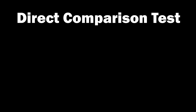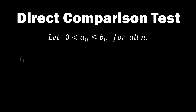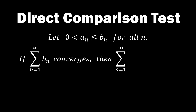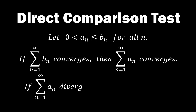Let's first understand what the direct comparison test is. Suppose we have two positive sequences a_n and b_n, where b_n is greater than or equal to a_n for all n. Then, if the sum of b_n as n goes from 1 to infinity converges, then the sum of a_n as n goes from 1 to infinity also converges. The contrapositive statement is: if the sum of a_n diverges, then the sum of b_n also diverges.